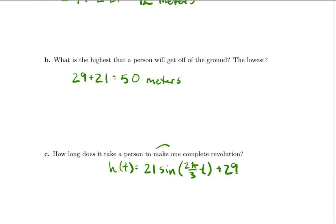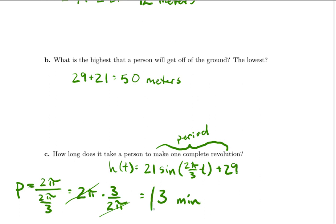Well, making one complete revolution, that's what our period is, right? And so we need to know what our period is, but we know that that is 2 pi, 2 pi over our B value, which is 2 pi over 3. But that's just 2 pi times the reciprocal of our B value. But of course, my 2 pi's cancel. And so that tells me that it takes three minutes to make one complete revolution.